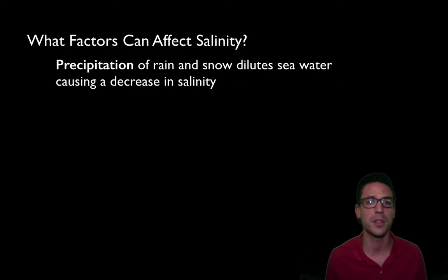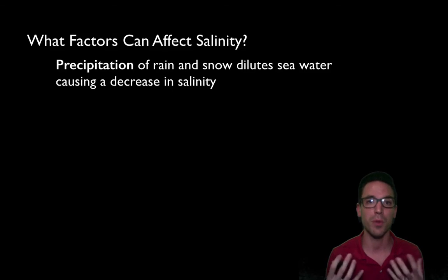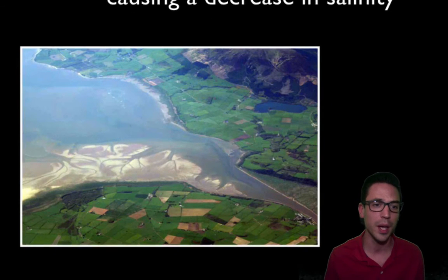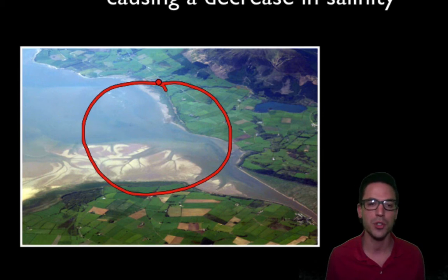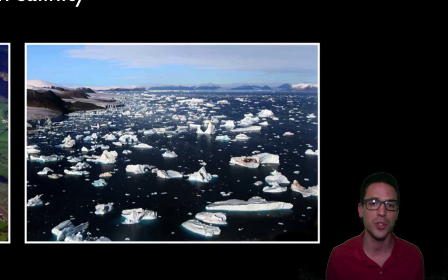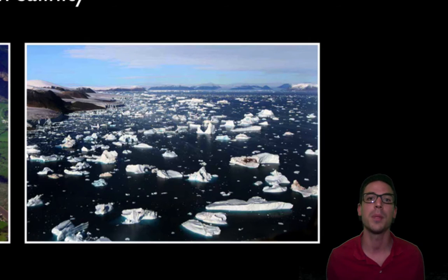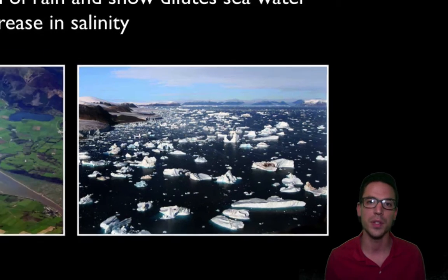Another factor affecting salinity is precipitation, which has the reverse effect. Rain or snow brings fresh water that dilutes the salt and decreases salinity. We see a similar effect in estuaries, where freshwater systems like rivers, streams, and lakes lead out to the ocean, decreasing salinity and producing what's called brackish water — not salt water, not fresh water, but a mixture. We also see decreased salinity near the Arctic where melting ice dumps large amounts of fresh water into the ocean.